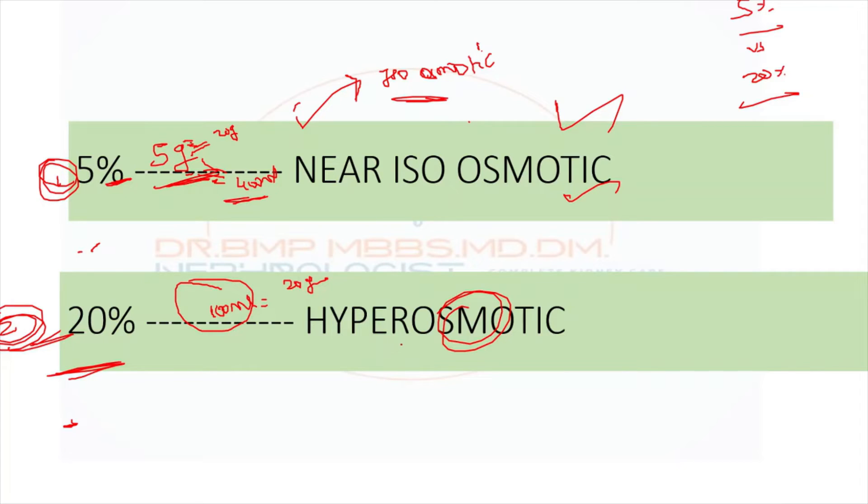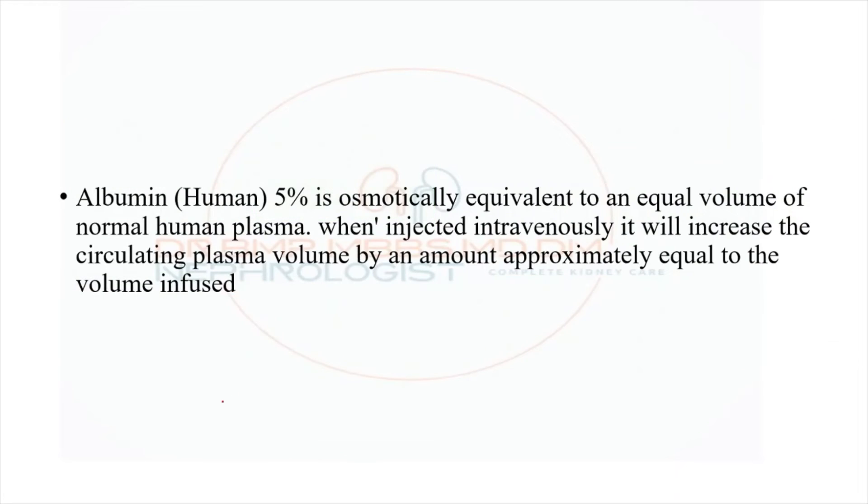20% hyperosmotic agent comes with its own set of side effect profile, that is osmotic alteration of the body fluids. But the only advantage over here is we are looking at 100 ml, so it won't affect it much. So volume overload, if present, go for 20%. This is the point mentioned over in the textbooks. 5% is osmotically equivalent to human plasma. When given intravenously, it increases the plasma volume similar to the amount infused.